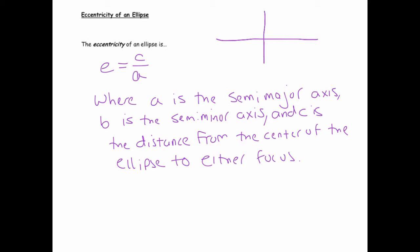And the smaller your eccentricity, the more closely the ellipse resembles a circle. And the bigger the eccentricity, the more it's really flattened out.